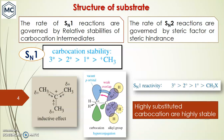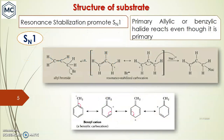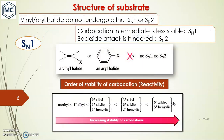Highly substituted carbocations are highly stable. In SN1, resonance also plays a role — resonance stabilization promotes the SN1 reaction. For example, primary allylic halide or benzylic halide can react even though it is primary, because the intermediate carbocation is resonance stabilized. Similarly, benzyl halide can react through the SN1 mechanism because the intermediate carbocation is resonance stabilized, as shown here.